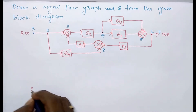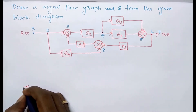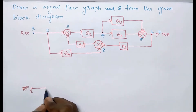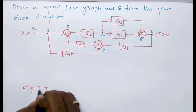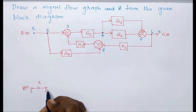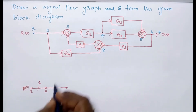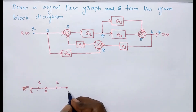Node one is the input. From node one to node two, there is no specific gain, so we consider this as unity gain. Next, from node two to node three, there is also no specific gain, so we consider this as unity gain.